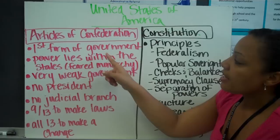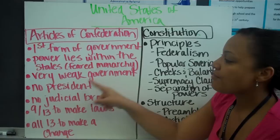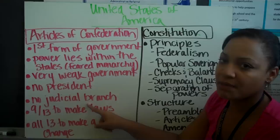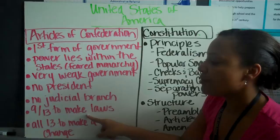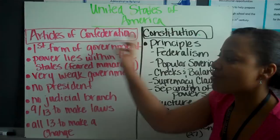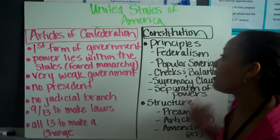So it sounds like our government is great, but let me explain why we moved away from the Articles of Confederation. It was our first form of government, but power lay within the states, not the federal government — because they feared having another monarchy. It was a very weak government: no president, no single leader, no judicial branch or Supreme Court to check the other branches. Nine out of 13 states had to agree to make a law, making it hard to pass anything. And changing the Articles required all 13 states to agree — which is why at the Constitutional Convention they had to throw the document out completely.